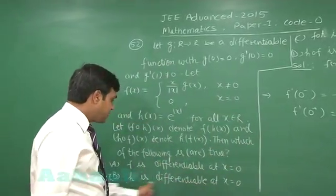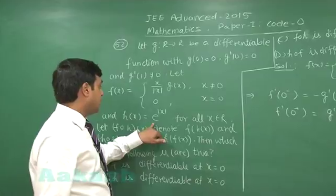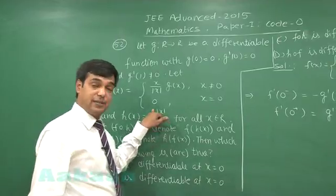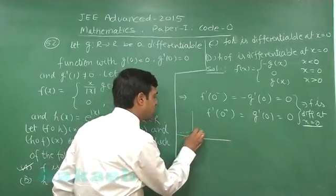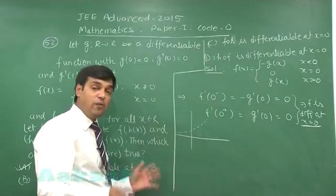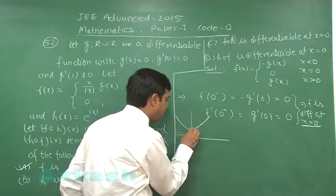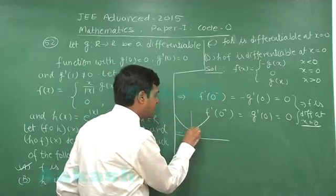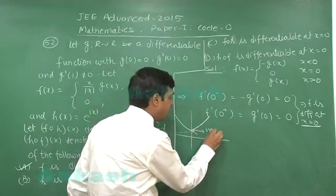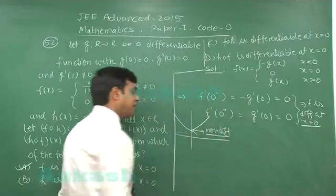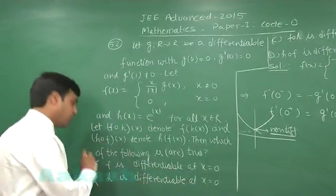Second part: h is differentiable at x = 0. Let us check — h(x) = e^|x|. We know the graph of e^x, and since we have |x| instead of x, it will be the mirror image, giving a sharp point at x = 0. So h is clearly non-differentiable at x = 0, and option 2 is not correct.